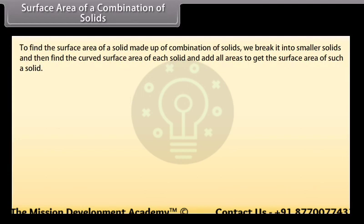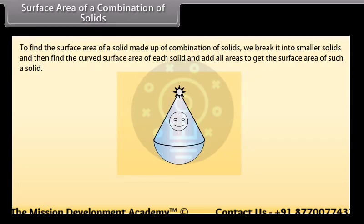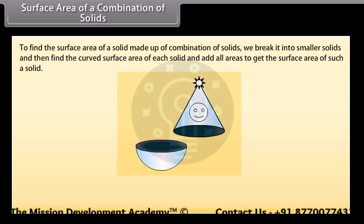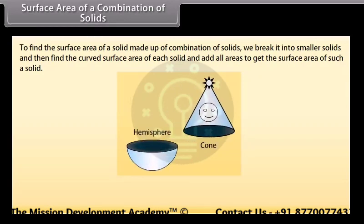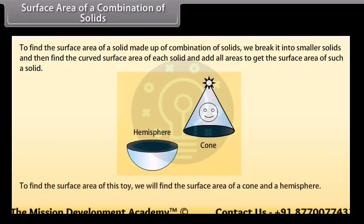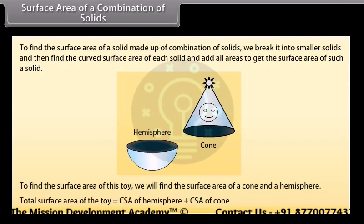To find the surface area of a solid made up of a combination of solids, we break it into smaller solids and then find the curved surface area of each solid and add all areas to get the total surface area. For example, look at this toy — it is a combination of a cone and a hemisphere. The total surface area of the toy equals the curved surface area of the hemisphere plus the curved surface area of the cone.